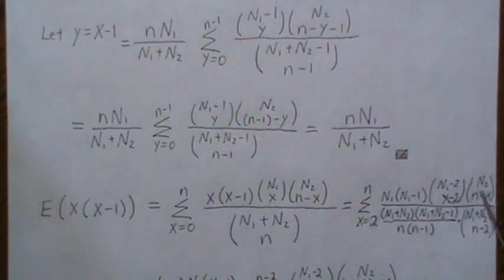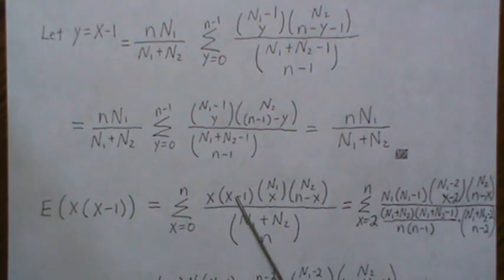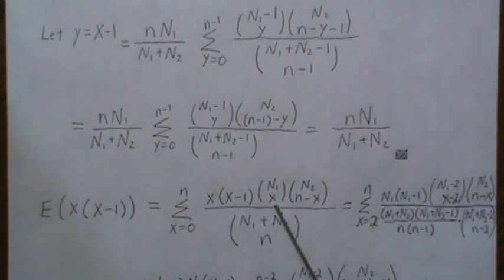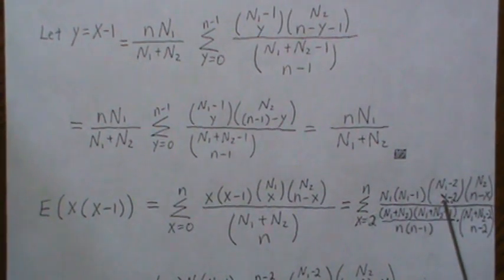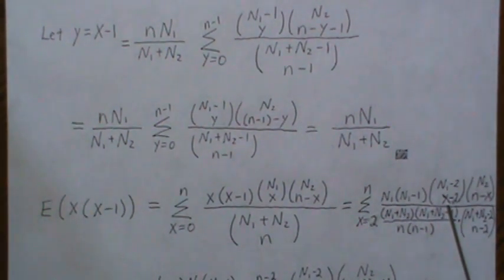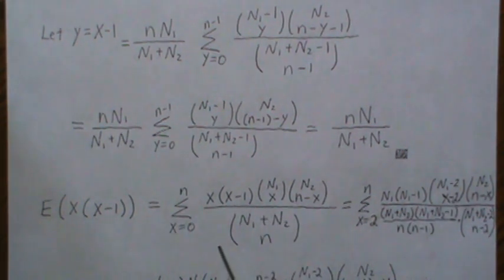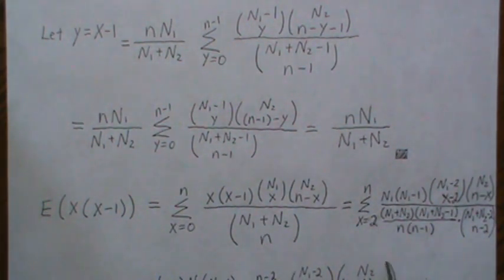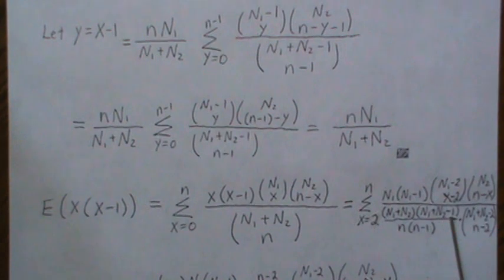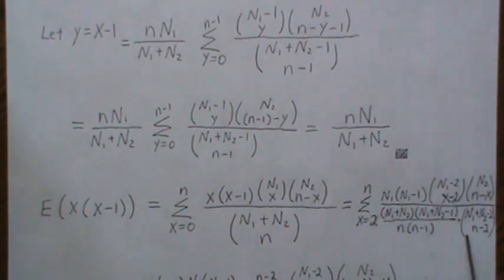So now this next equation, what we do is this piece stays the same. And then the x times x minus 1 cancels with this x factorial. But then we also need to bring out an N1 and an N1 minus 1. So this piece here is equal to this piece. And that's N1 minus 2, choose x minus 2. It gets a little small here. Sorry about that. And then here, we factor out an N and an N minus 1 and an N1 plus N2 and an N1 plus N2 minus 1. So that's what this is. So this piece here can be rewritten as this. So this is a fraction of N1 plus N2 and then N1 plus N2 minus 1 divided by N, N minus 1. And this is a combination.